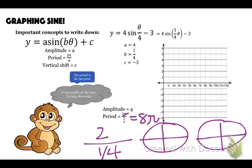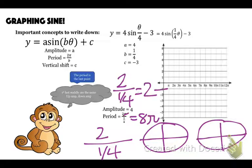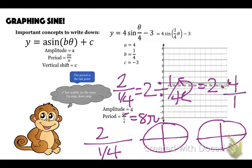Mathematically: two over one-fourth is the same as two divided by one-fourth. When you divide by a fraction you flip and multiply, so that's two times four over one, which is eight. Therefore the period is eight pi.